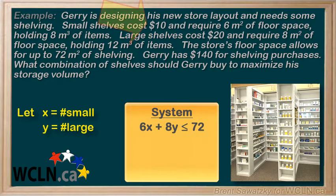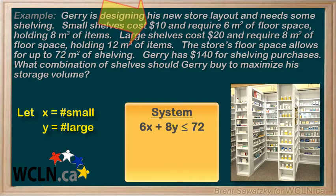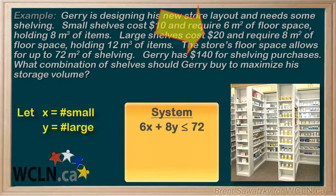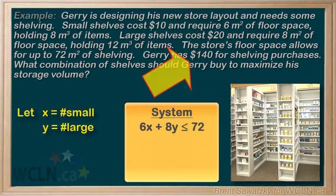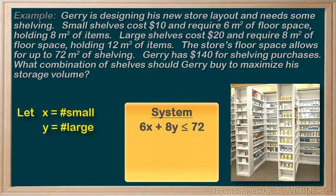Now back to our question, and we see that small shelves are $10 each, large shelves are $20 each, and he has a total shelving budget of $140. So our second inequality is 10x, the total cost of small shelves, plus 20y, the total cost of large shelves, and that all has to be equal or less than 140.